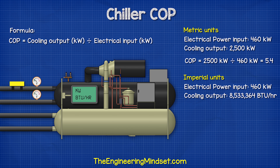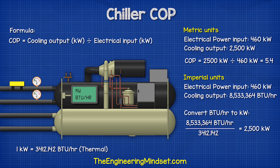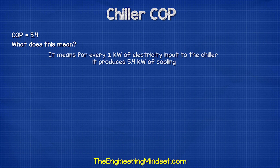When using the imperial units, the chiller is demanding again 460 kilowatts of electricity and providing 8.5 million BTUs per hour. We need to convert that into kilowatts, so we divide by the conversion factor of 3,412 to get 2,500 kilowatts. Then we drop those numbers in to get a COP of 5.4. This means that for every 1 kilowatt of electricity we input into the chiller, it produces 5.4 kilowatts of cooling.